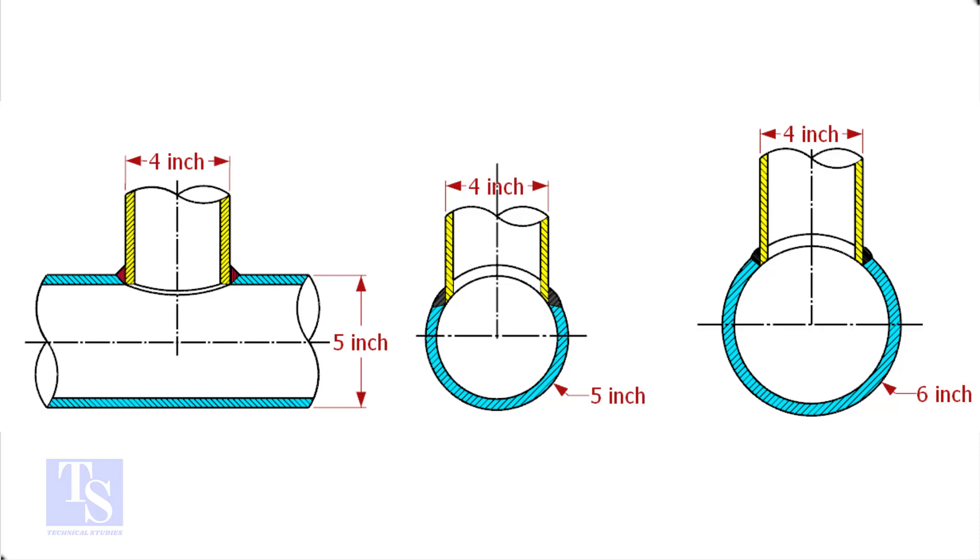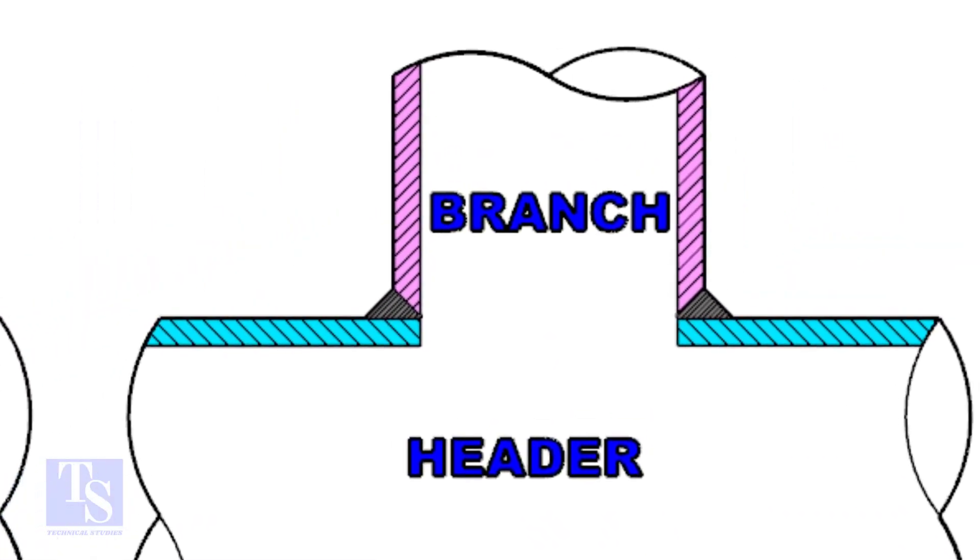Watch the section side view carefully. Check the stub-on view. The branch pipe sits on the header. The cut-back cutting of the branch pipe is done and the bevel also is prepared.